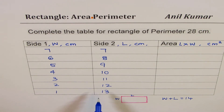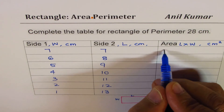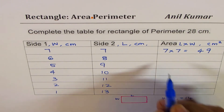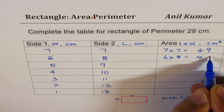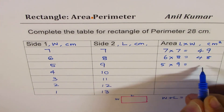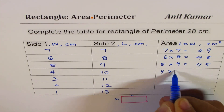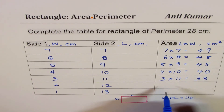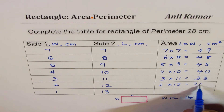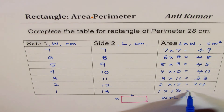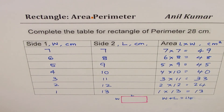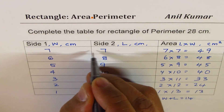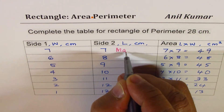For the areas, you can use a calculator: 7×7=49, 6×8=48, 5×9=45, 4×10=40, 3×11=33, 2×12=24, and 1×13=13. You'll notice the maximum area is for the square — 7 by 7, giving 49. Once again, the square gives you the maximum area for the same perimeter.